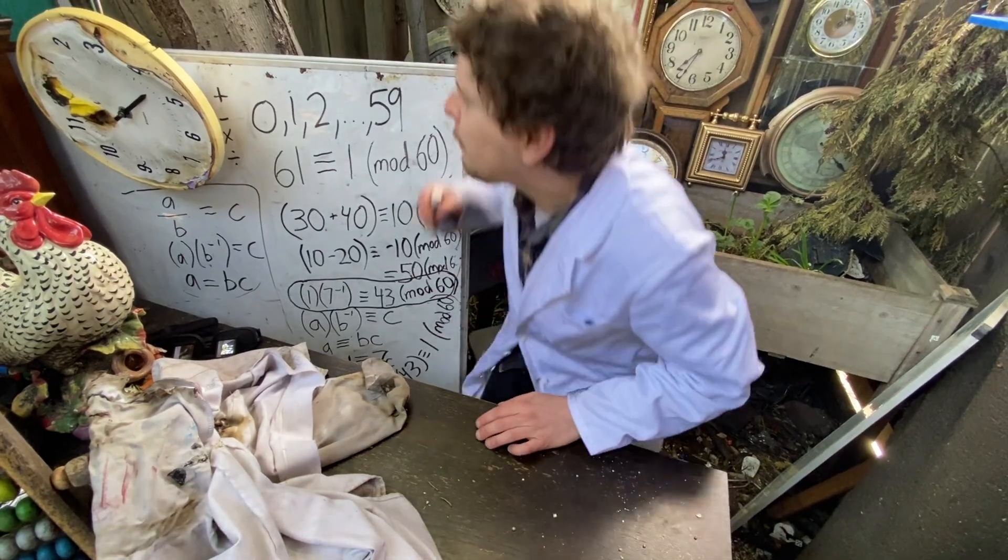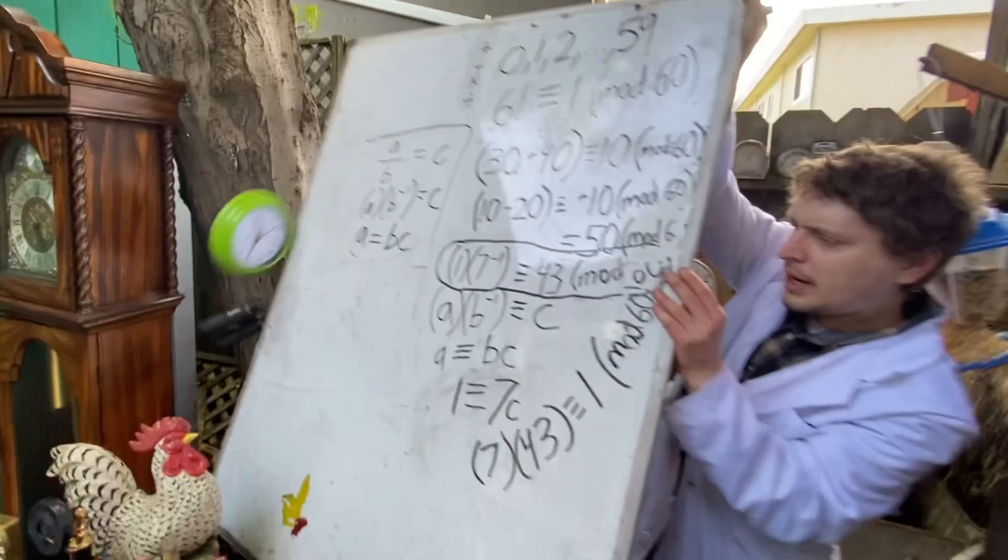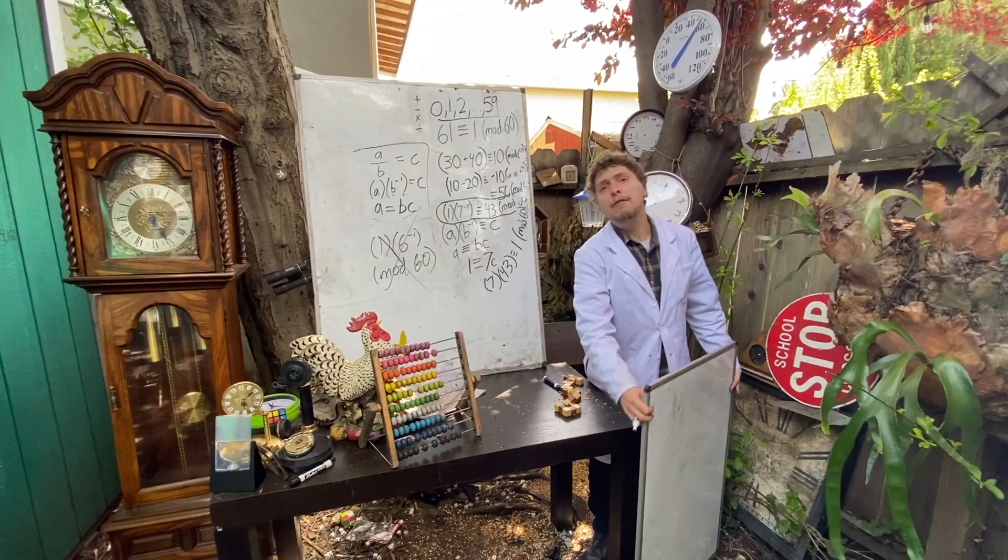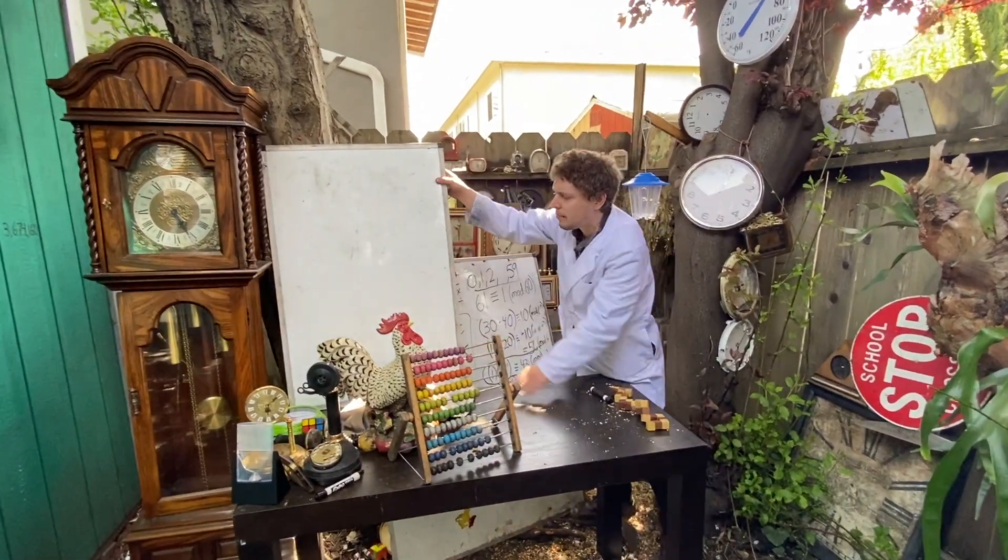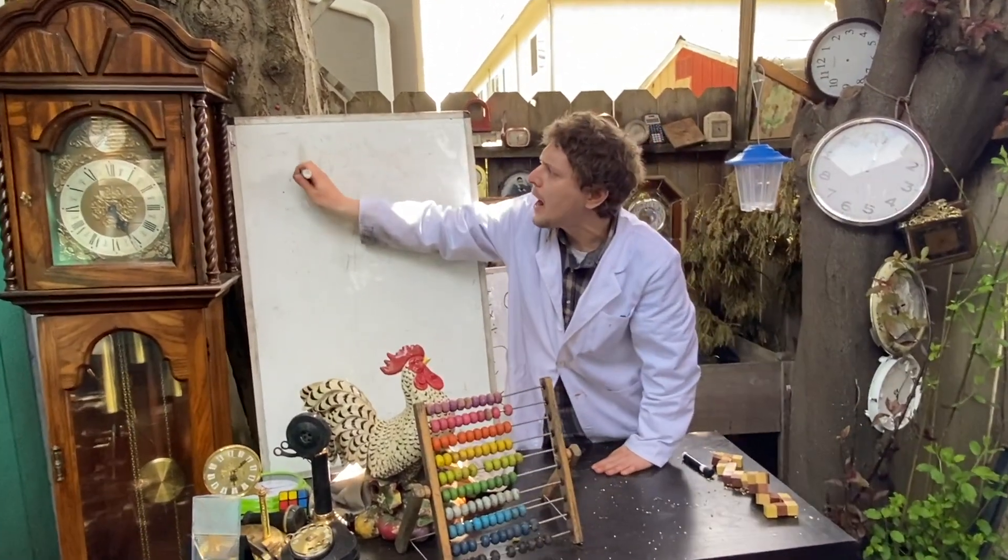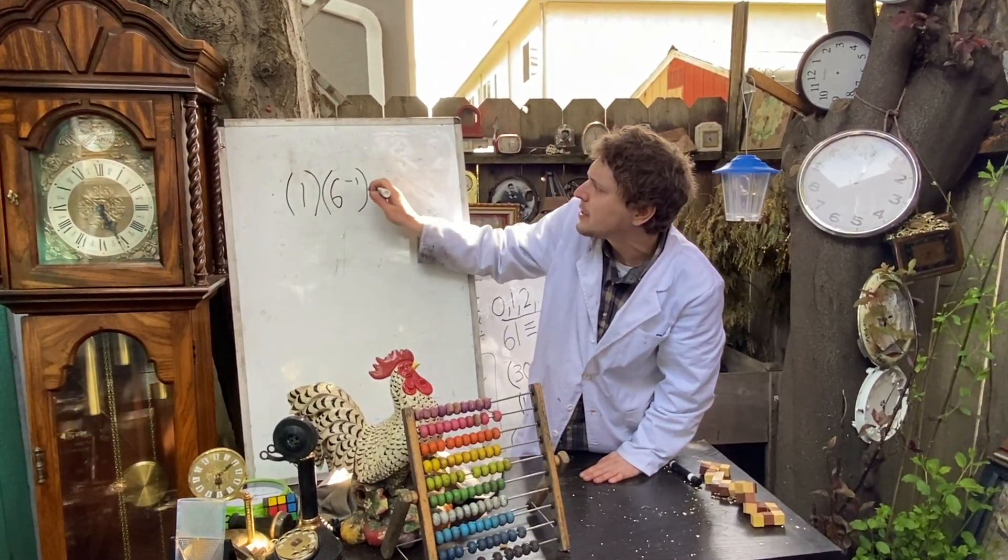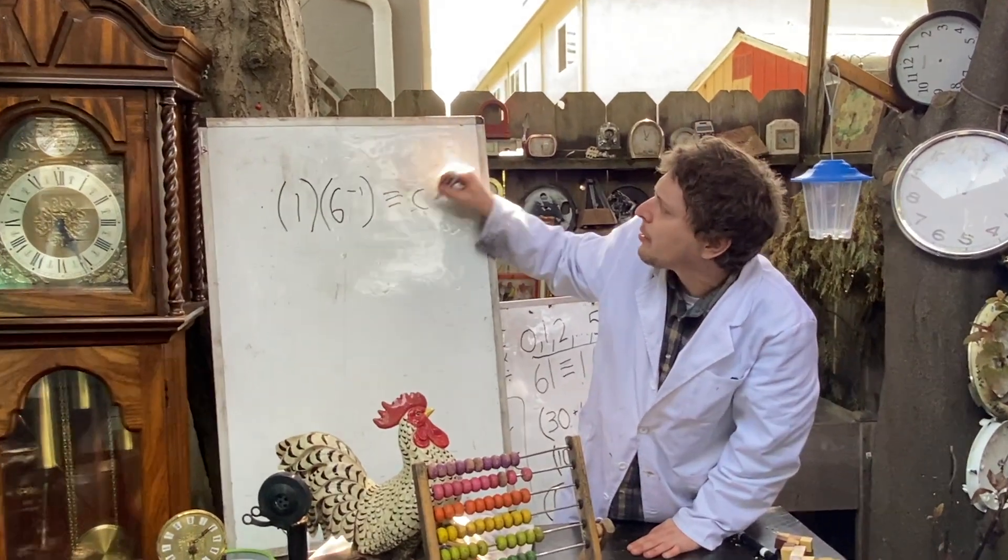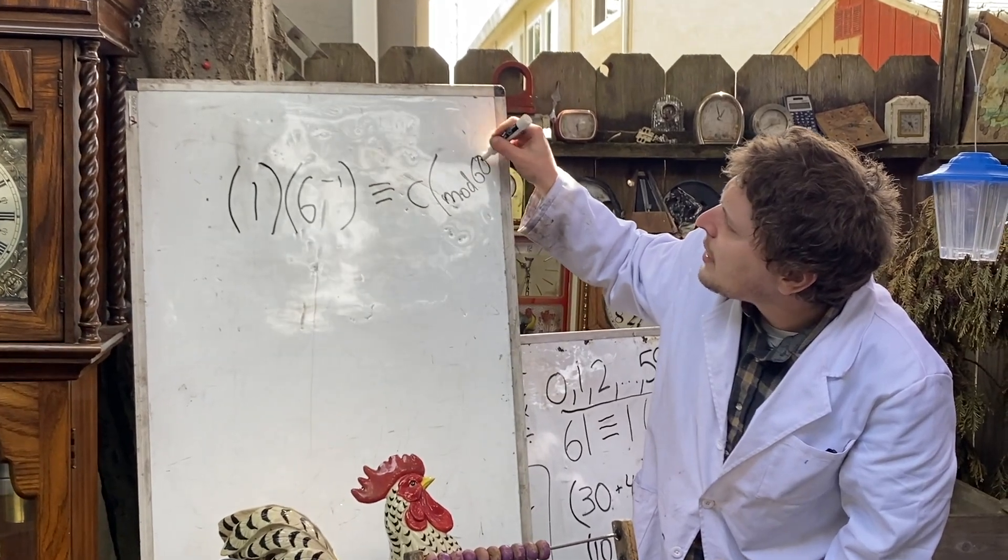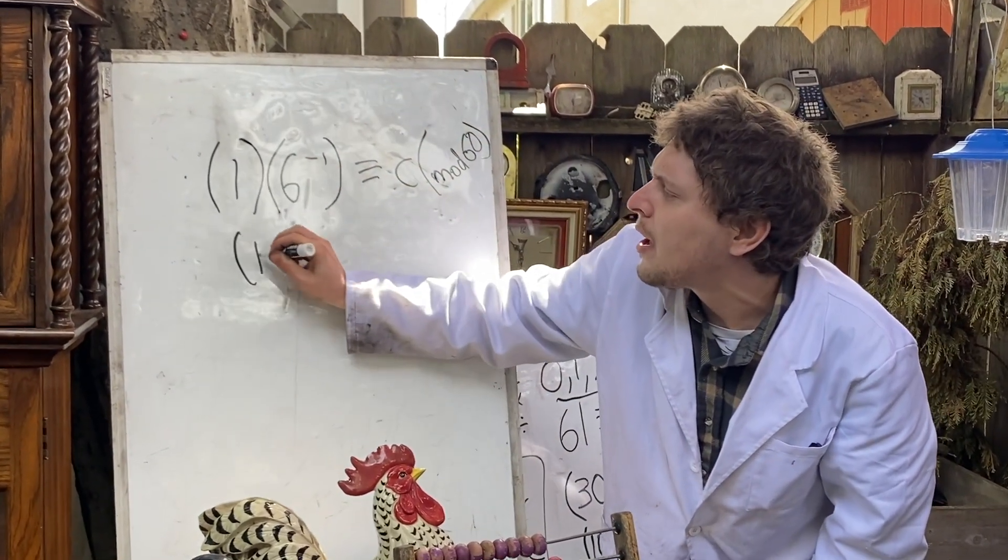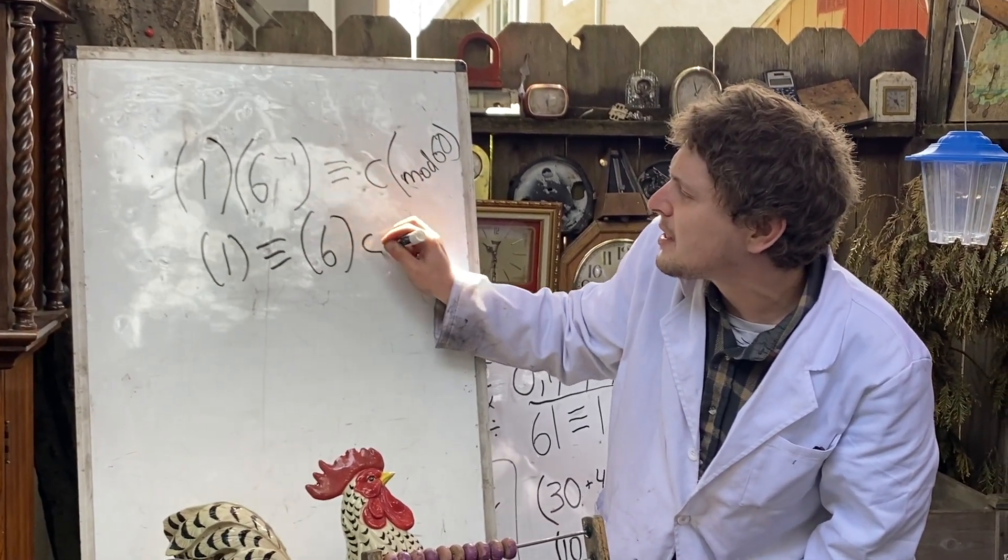However, if I tried to divide by 6, 1 by 6 in this mod 60 system, that would be written as 1 times the modular multiplicative inverse of 6 being congruent to some number we were calling c in mod 60. But that could be written as 1 being congruent to 6 times this c.